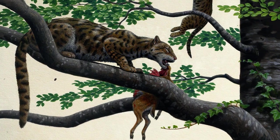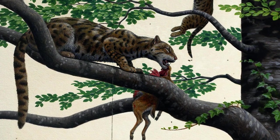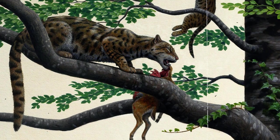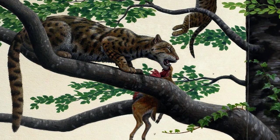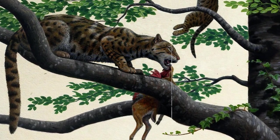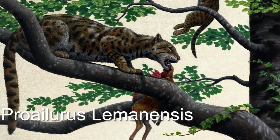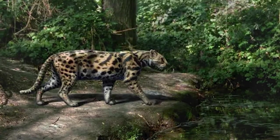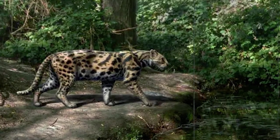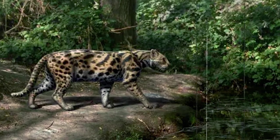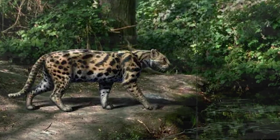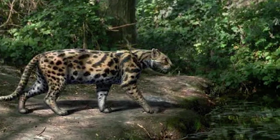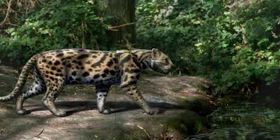Lions, and indeed all of today's cats, have a common ancestor that walked the Earth 25 million years ago. Its name, Proailurus laminensis, meaning the first cat. With its body a similar size to domestic cats, this creature was the first step in the lineage that led to the African and Asian lions we see today.